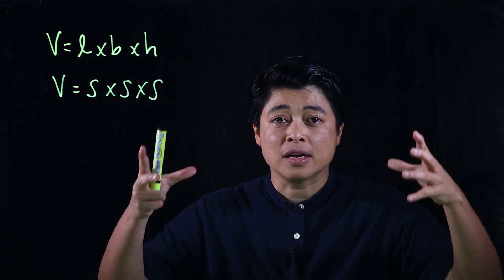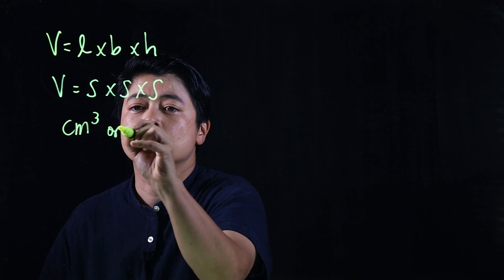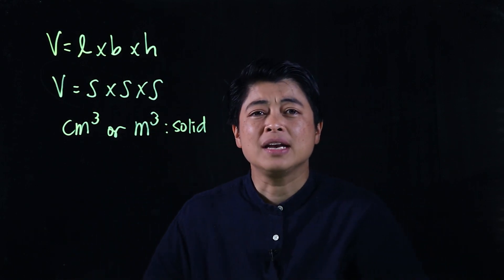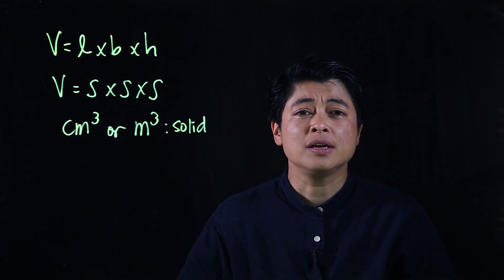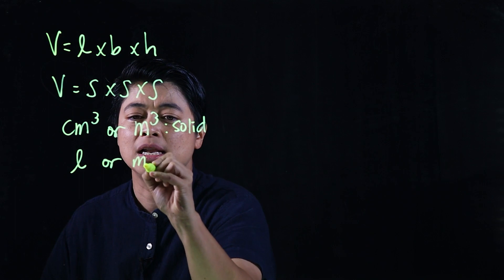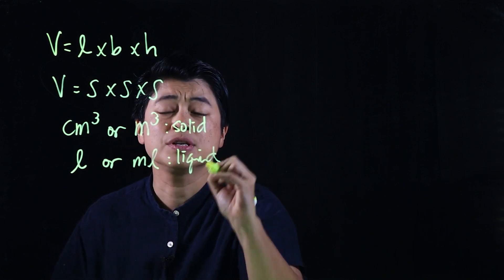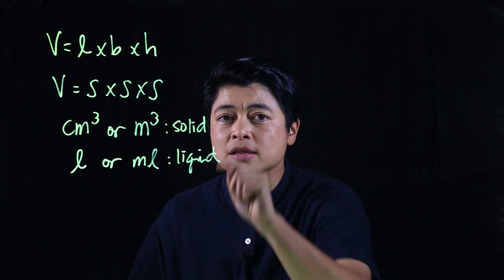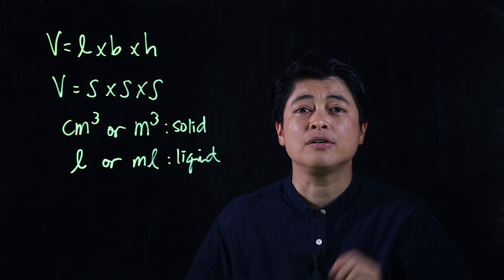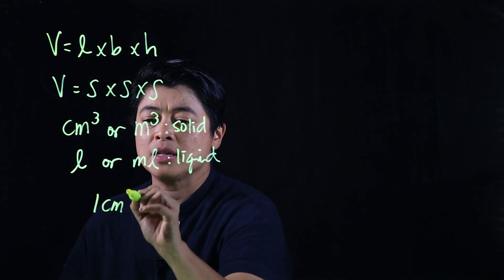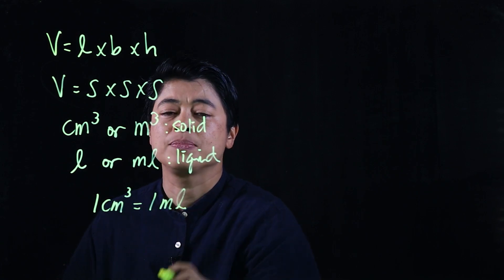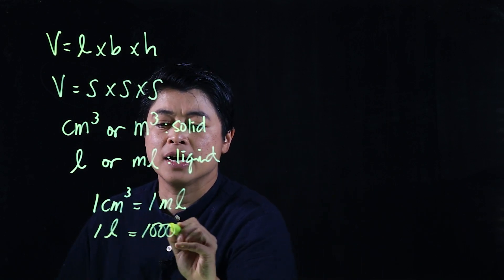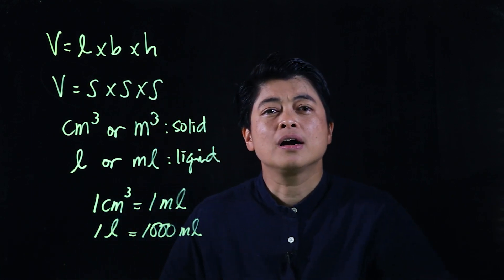The unit of measurement for solids is cm cubed or meters cubed — we saw that in the last lesson. For liquids, volume is measured in liters or milliliters. Since liquid is poured into a solid container, we need to convert: one centimeter cubed equals one milliliter, and since milli means a thousand, one liter equals one thousand milliliters.